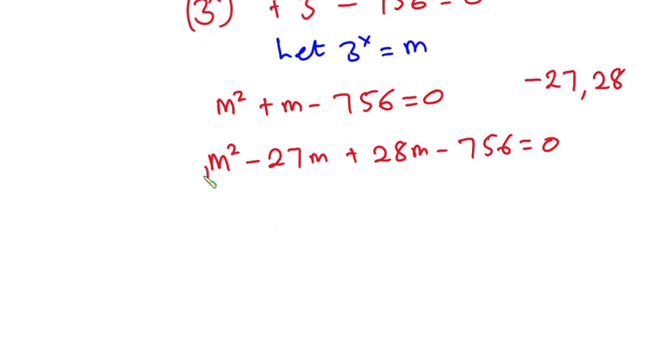Now let's consider this one first—you can factor m out, so we have m times m minus 27. Then from here, 28 is common, so we can take it out: 28 times m minus 27.